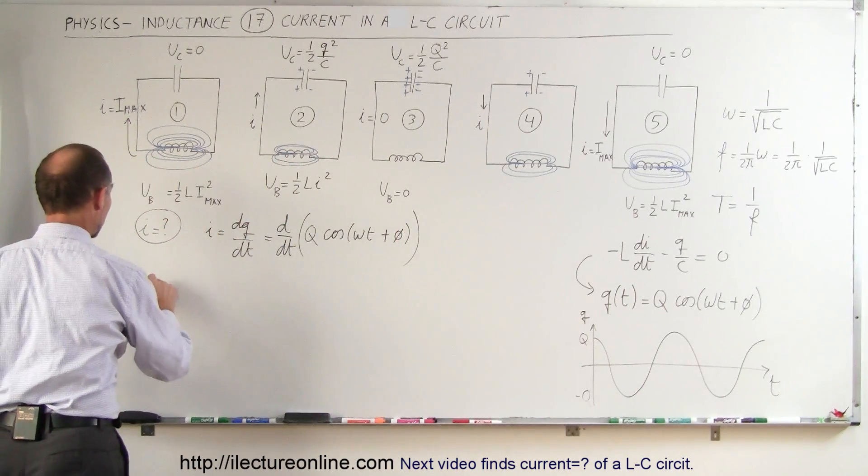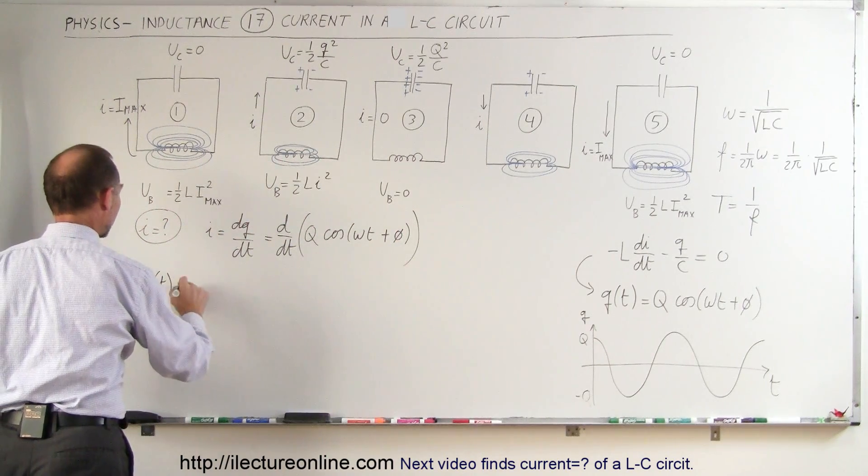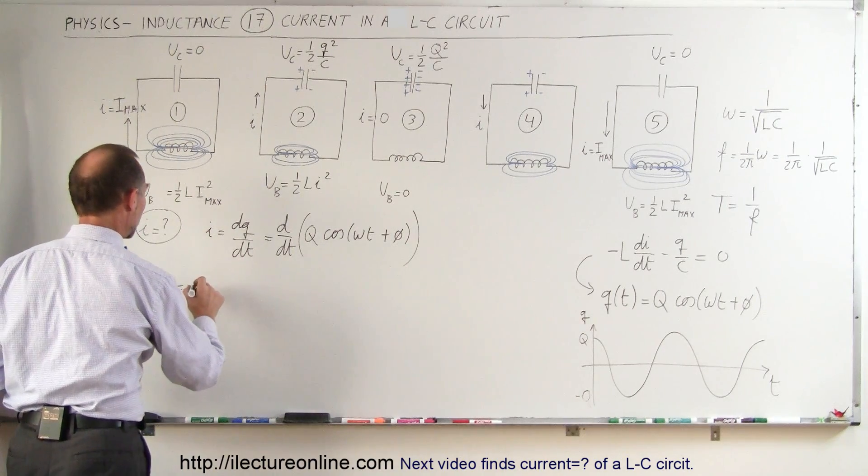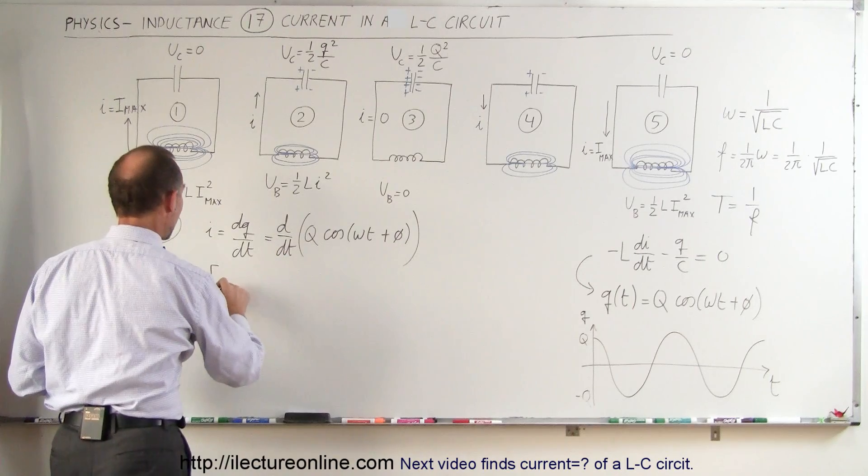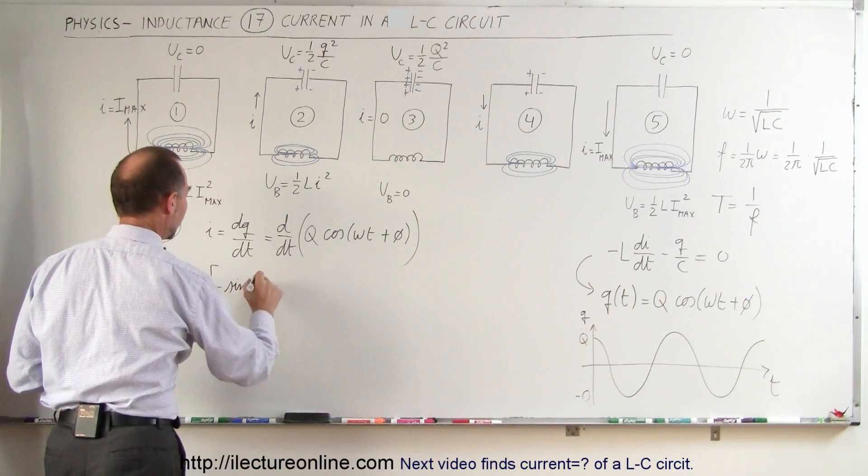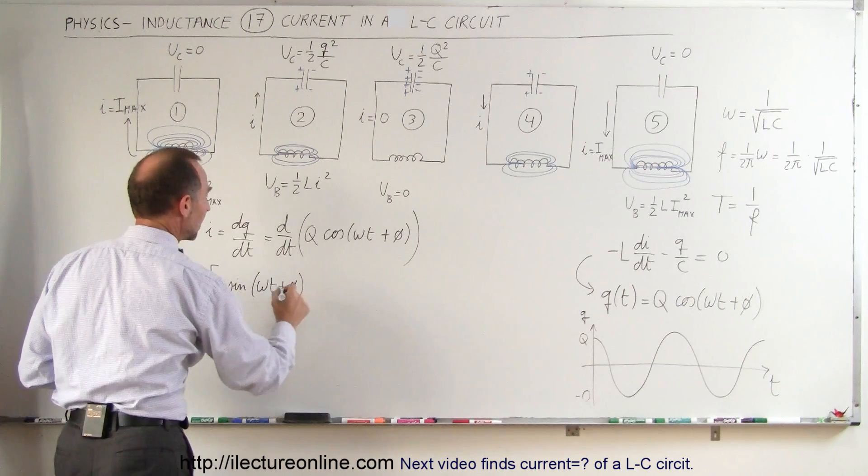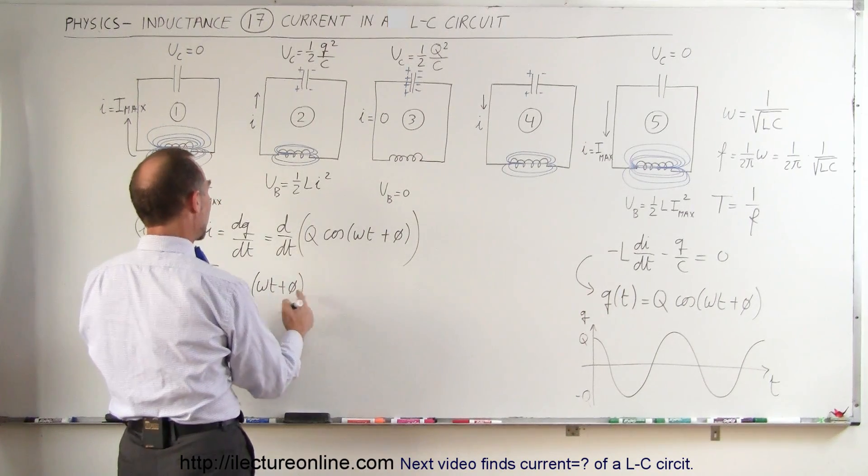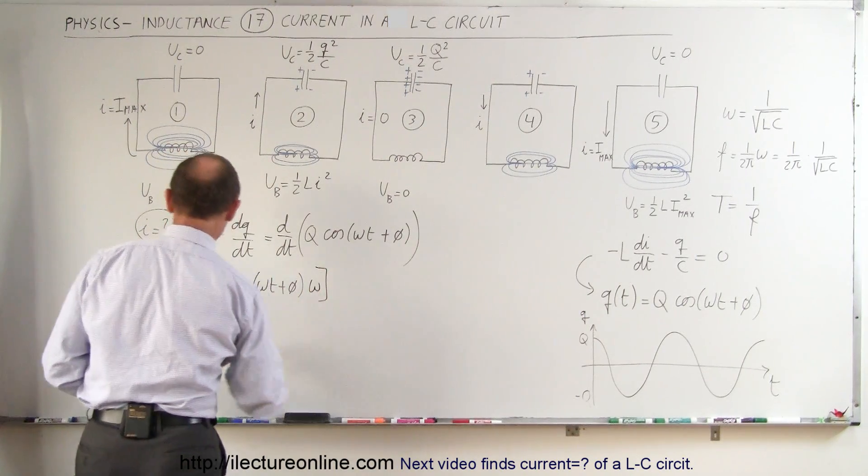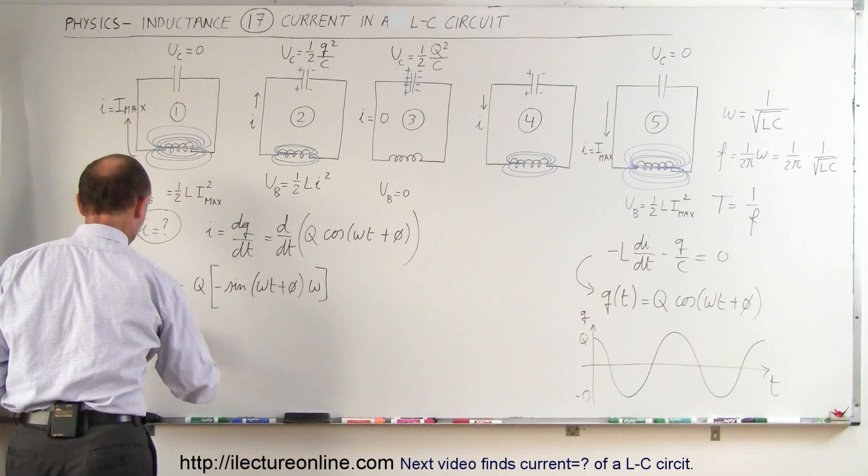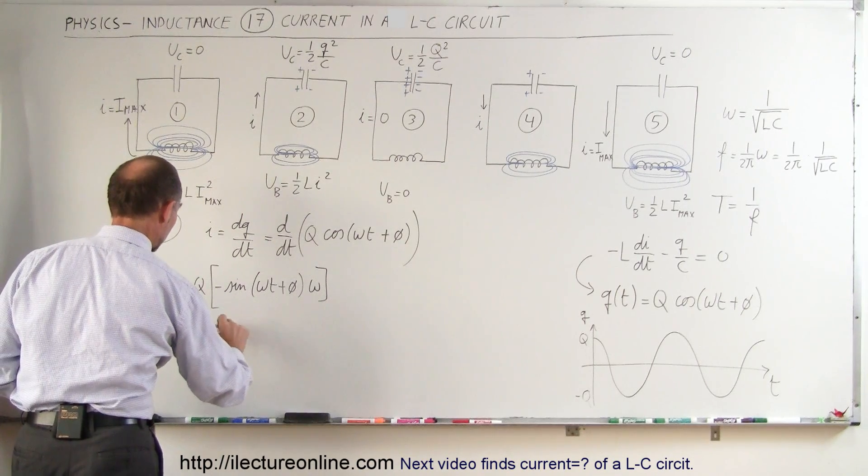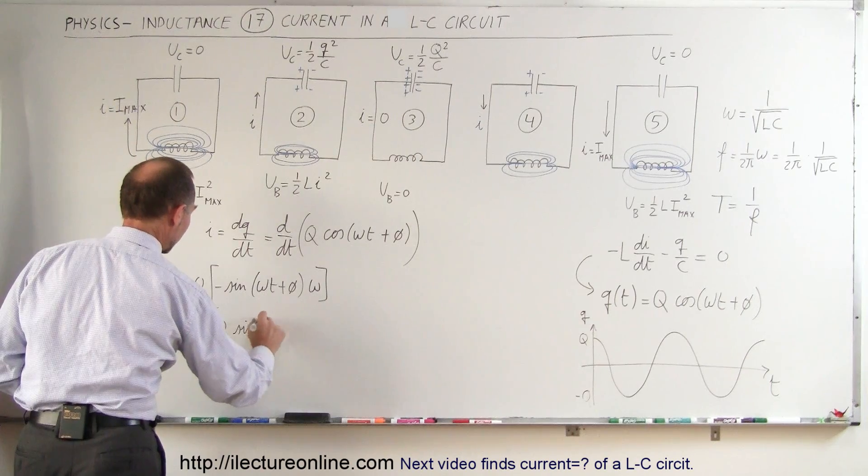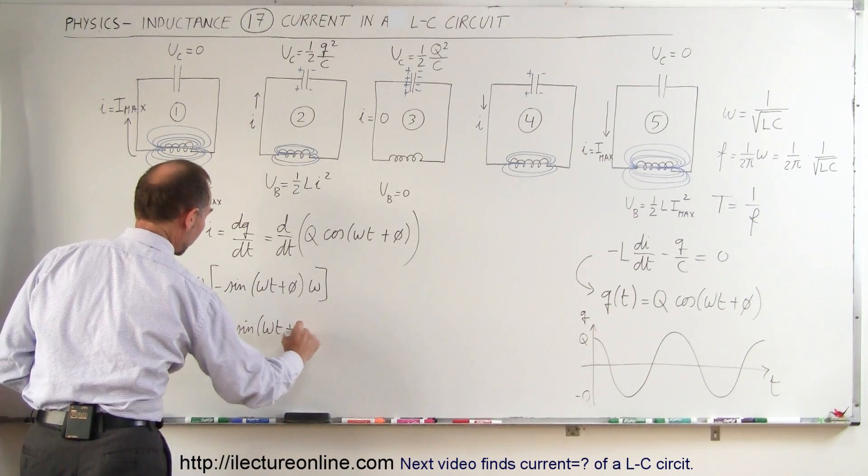So if we do that we then know that the current as a function of time in the circuit is going to be equal to Q times the derivative of cosine, which would be the minus sine of omega t plus phi, times the derivative of the angle which is times omega. So therefore we can say that I as a function of time is equal to minus omega Q times the sine of omega t plus phi.